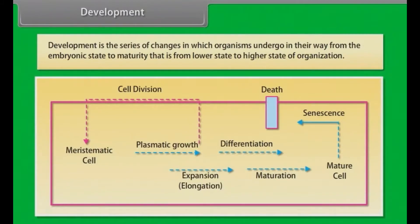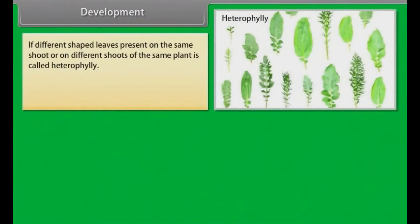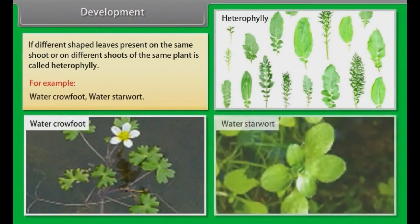Development. Development is the series of changes in which organisms undergo in their way from the embryonic state to maturity, that is, from lower state to higher state of organization. Plants undergo different pathways and phases of life in order to form different kinds of structure. This is termed as plasticity. If different shape leaves present on the same shoot or on different shoots of the same plant, it is called heterophylly. For example, water crowfoot, water starwort.